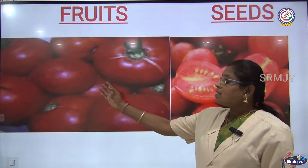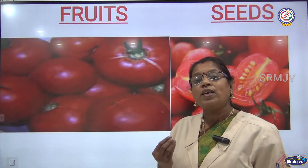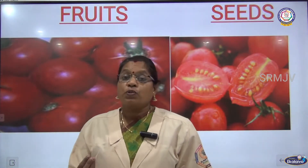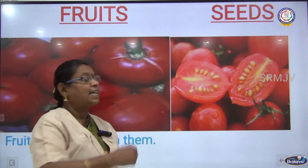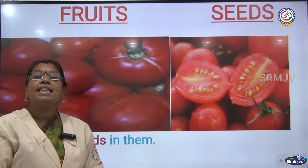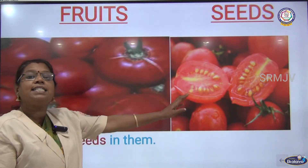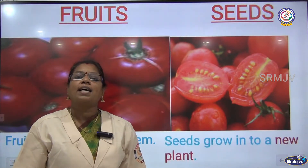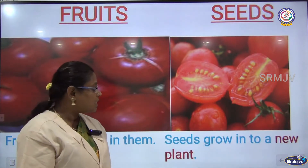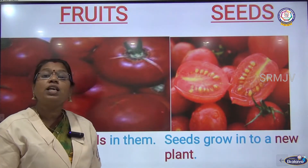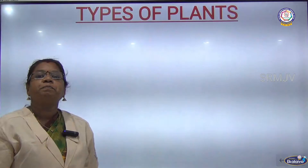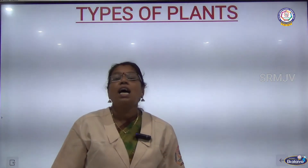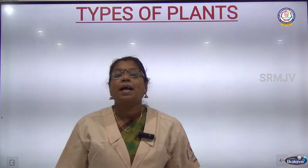Fruits are the sweet part of the plant. Fruits have seeds inside them, and these seeds help the plant grow into a new plant. So all these are the parts of the plant.